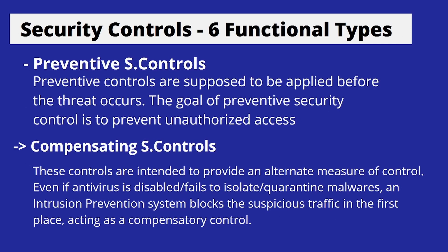There are six functional types of security controls. First, preventive security controls are applied before a threat occurs, with the goal of preventing unauthorized access — examples include firewalls, email filtering, and multi-factor authentication. Second, compensating security controls provide an alternate measure of control. For instance, if antivirus fails to isolate or quarantine malware, an intrusion prevention system can block the suspicious traffic, acting as a compensatory tool.